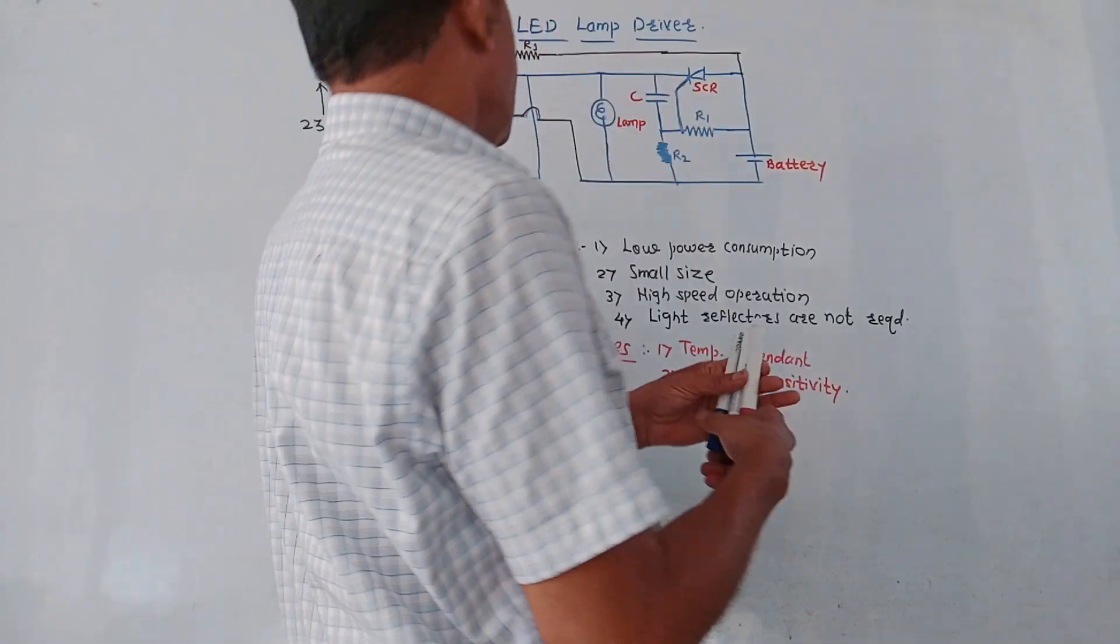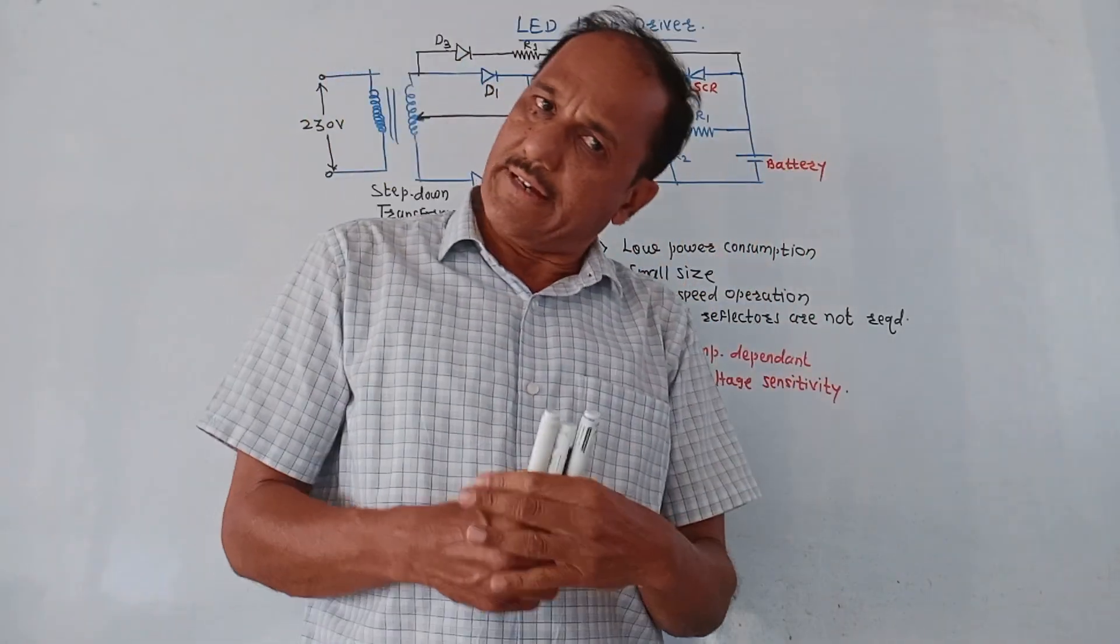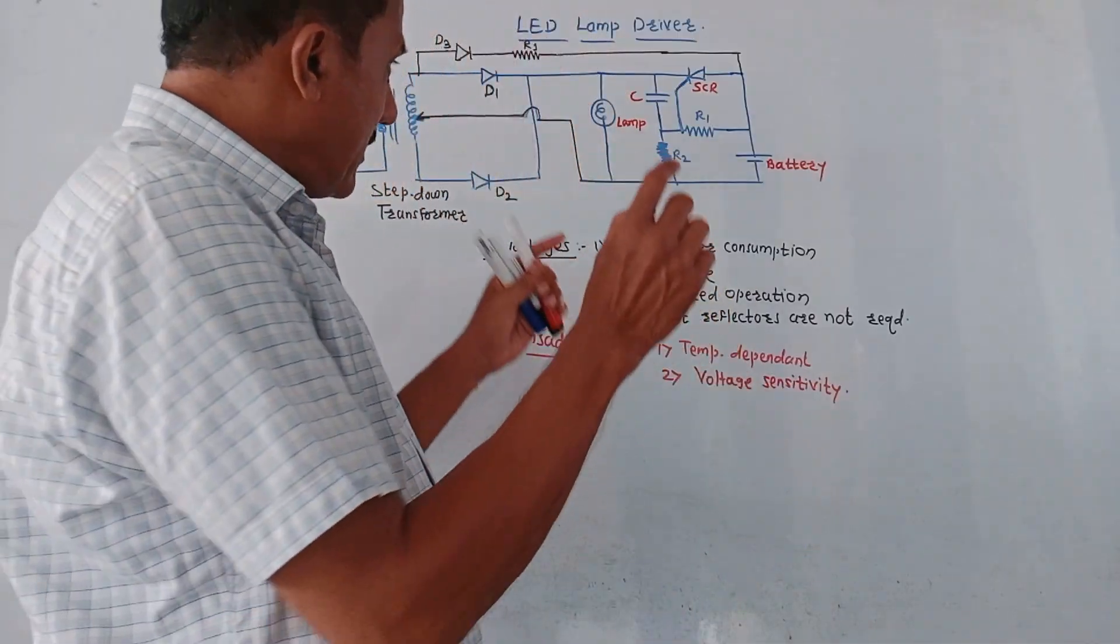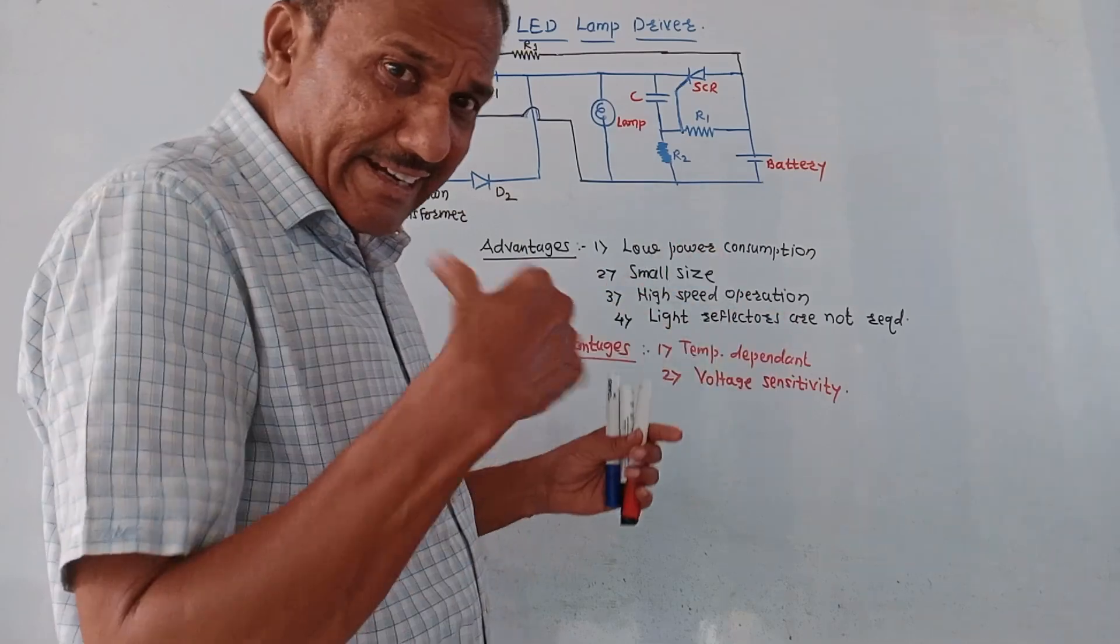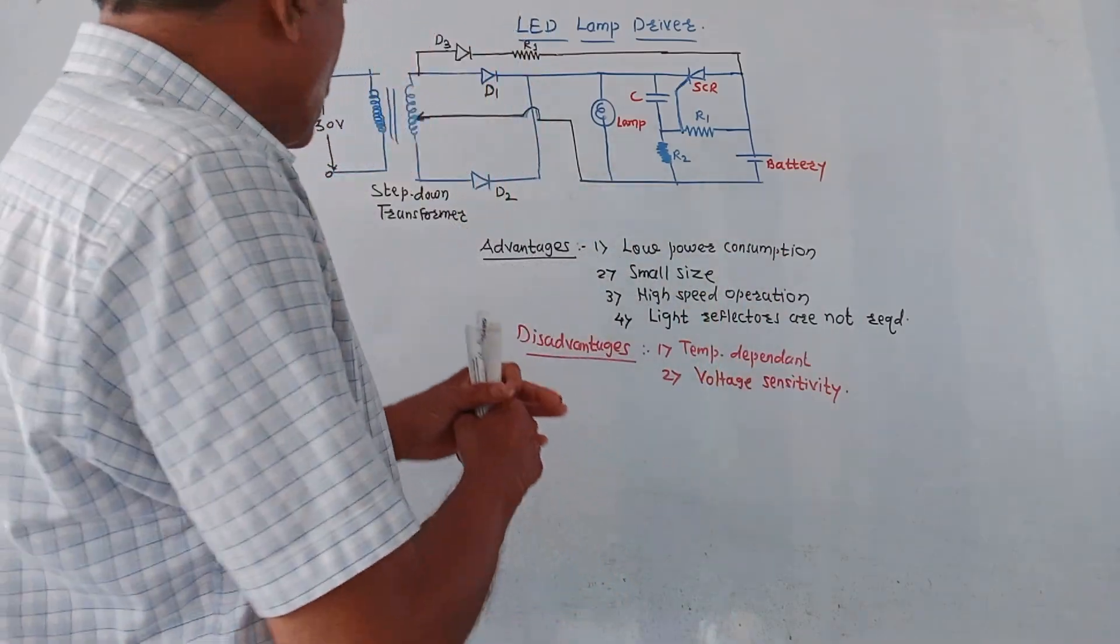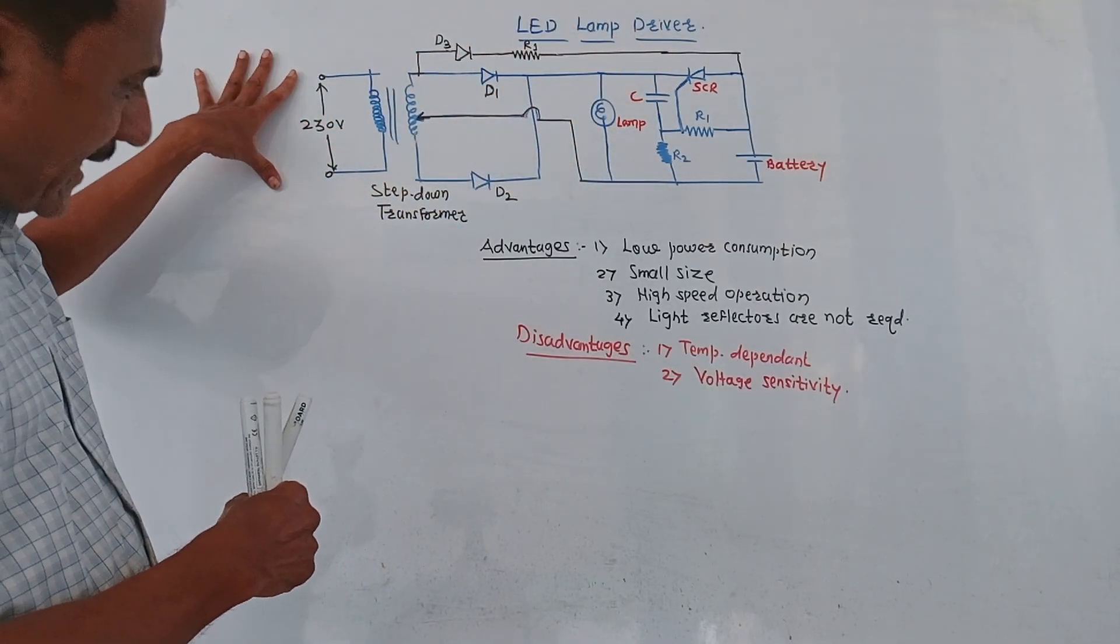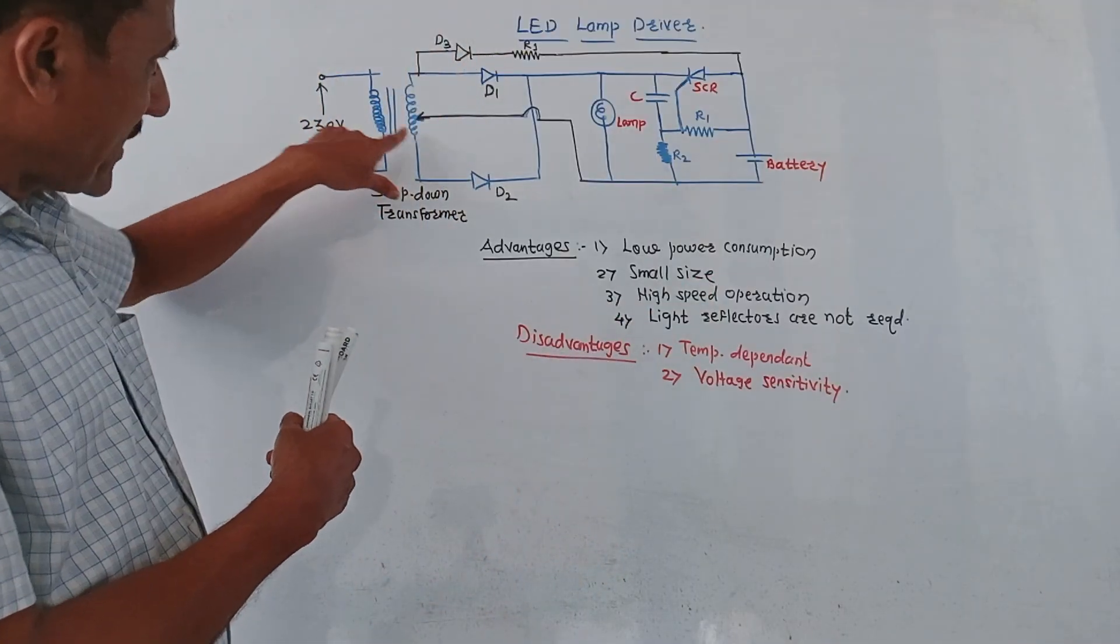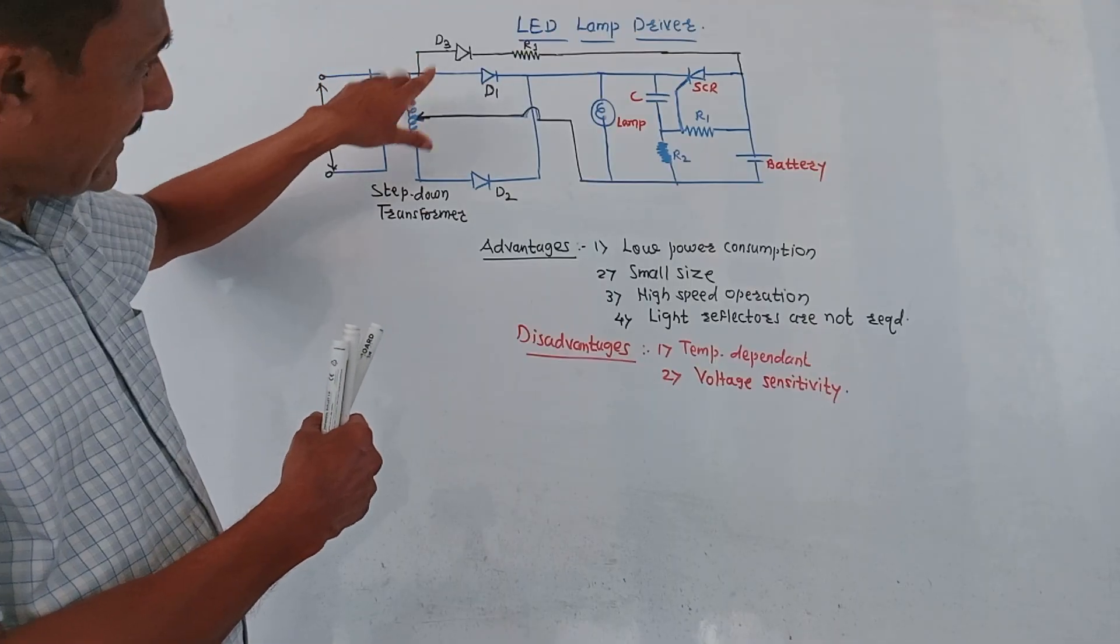The next application is LED lamp driver using SCR or TRIAC. This is basically used for household applications. We are considering a circuitry which will switch on the LED lamp which operates at 6 volt supply. So this is the corresponding circuit diagram. At the input side we are applying 230 volt single phase AC input supply. This is a step down transformer. At the secondary we are using a center tap connection.